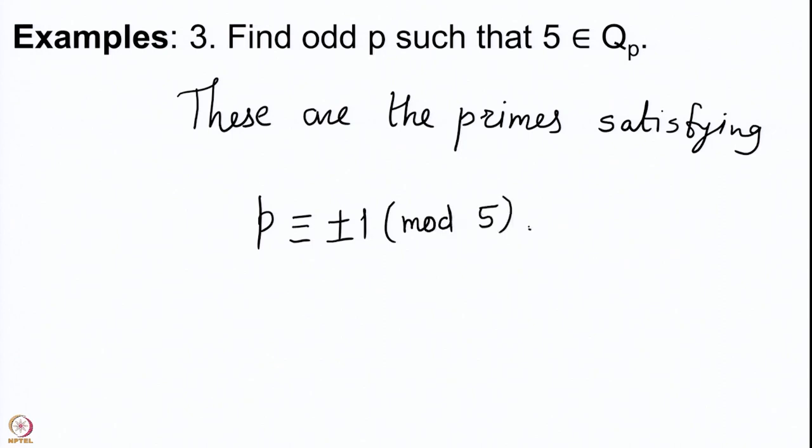This turned out to be a simpler problem because we are now able to answer the question. The primes satisfying p ≡ ±1 (mod 5) are those where (5/p) = 1. For instance, 31 is a prime where the Legendre symbol (5/31) = 1; indeed 6² = 36 ≡ 5 (mod 31). Whereas 37 is a prime congruent to 2 modulo 5, so 5 is not a square modulo 37. We can therefore find all odd primes p with the property that 5 is a square modulo p.